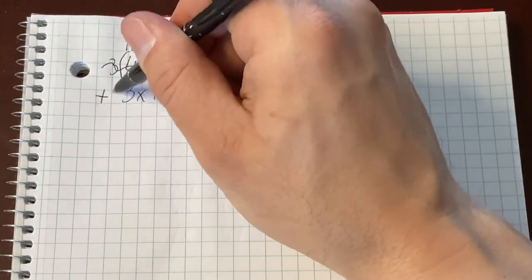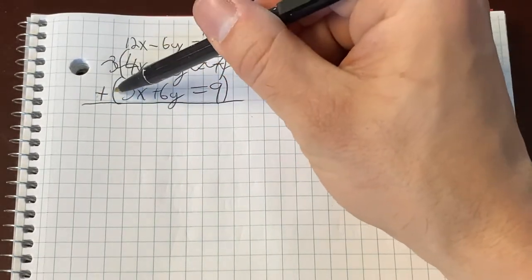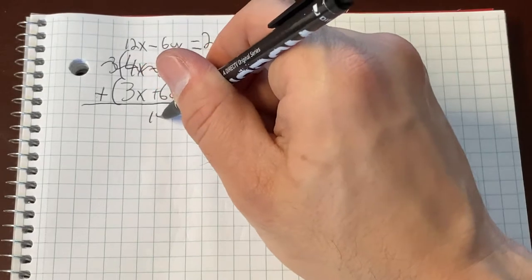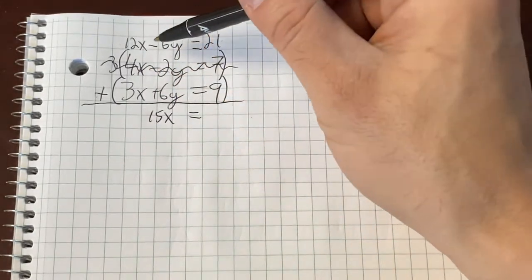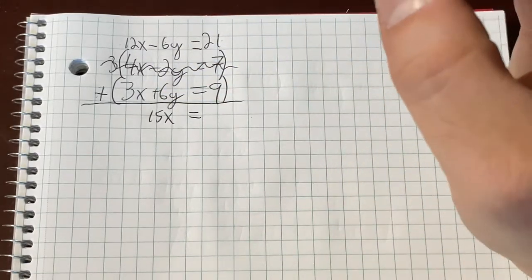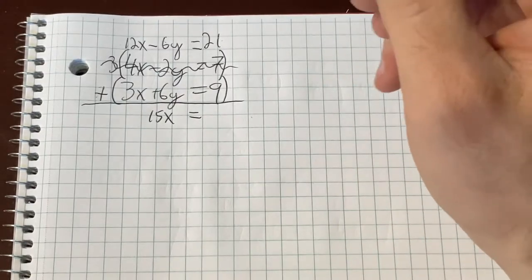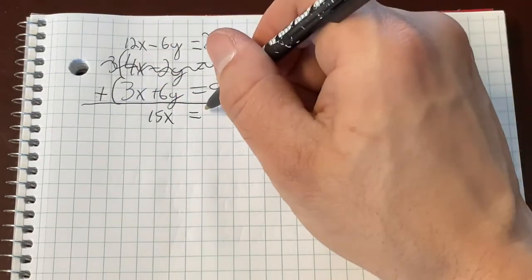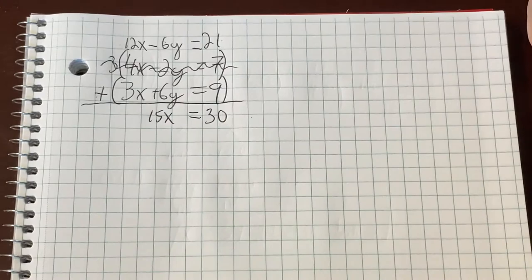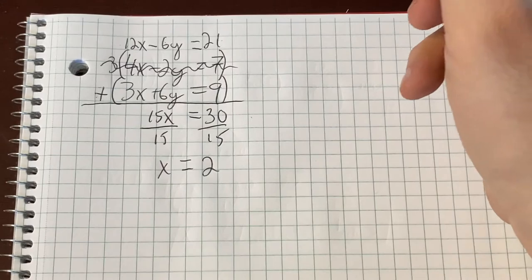And we are going to use it to eliminate the y's because a negative 6 and a positive 6 can eliminate by adding. So now we add these two equations together. 12x plus 3x is going to give me 15x. And I can write it right here because I know the y's are eliminating. Negative 6 plus 6 is 0y's. The y's have eliminated. 21 plus 9 is 30. Divide both sides by the 15. And you get x equals 2.